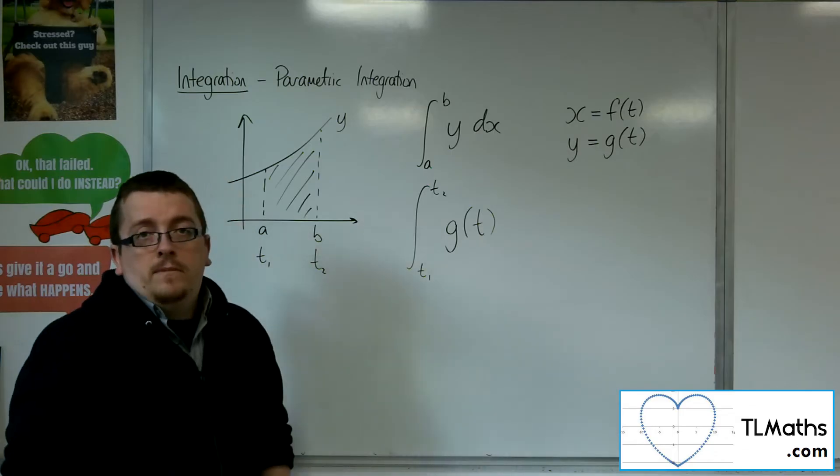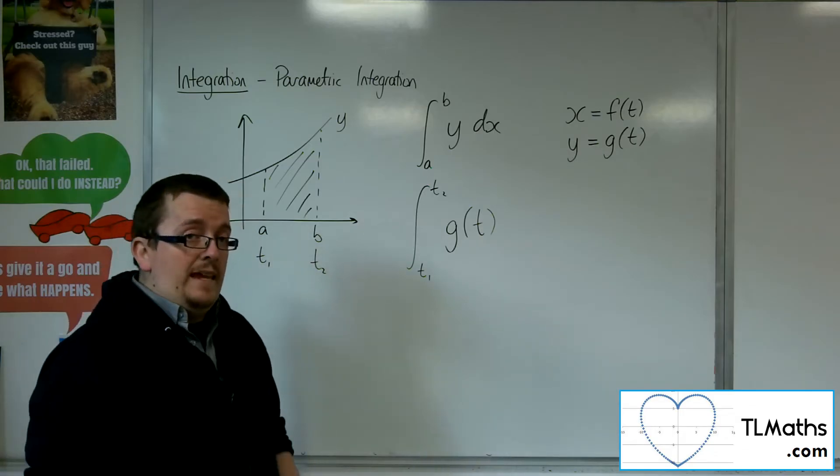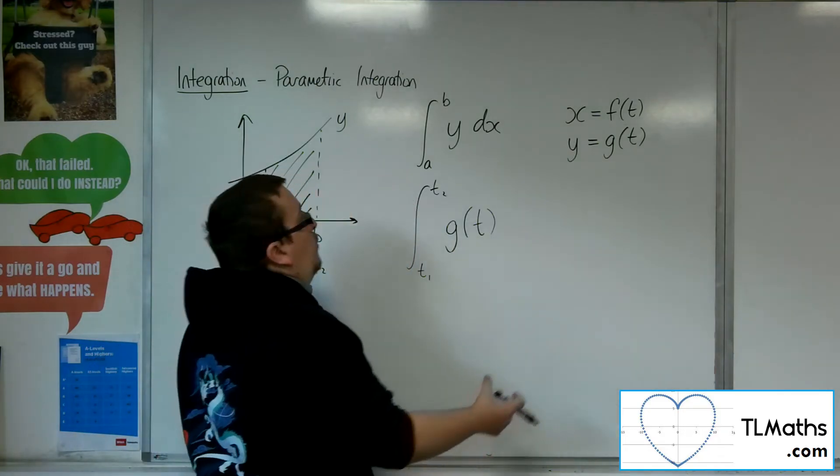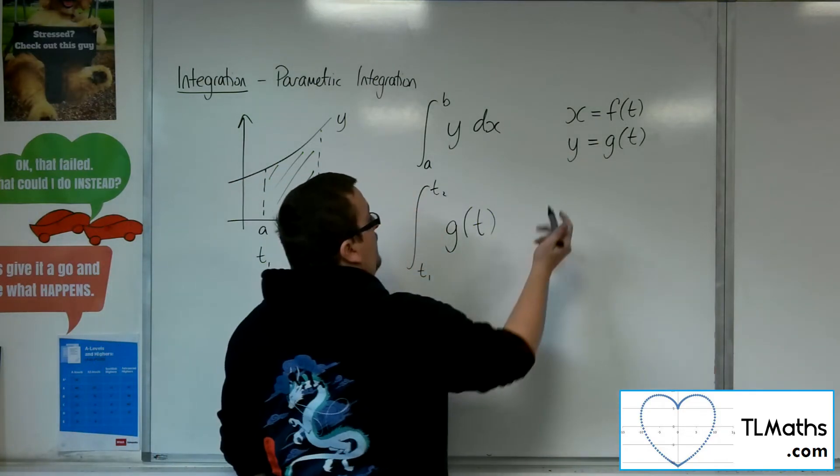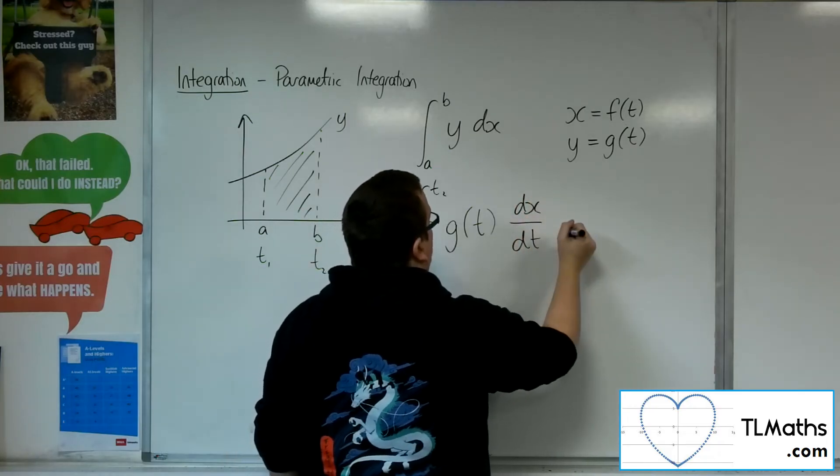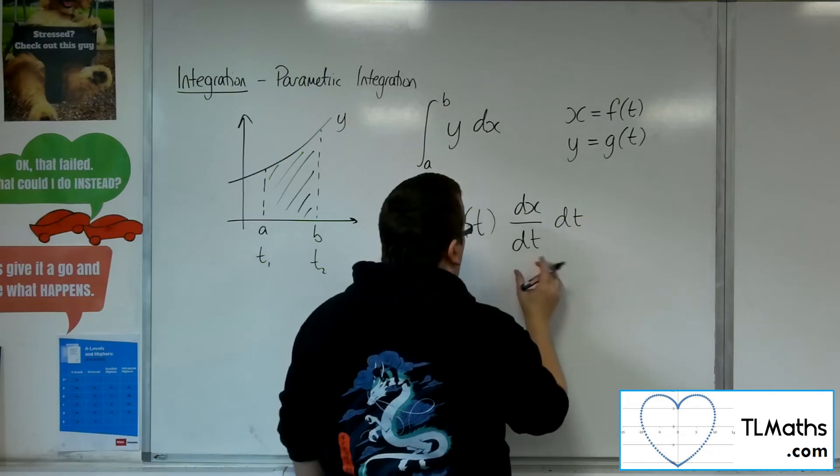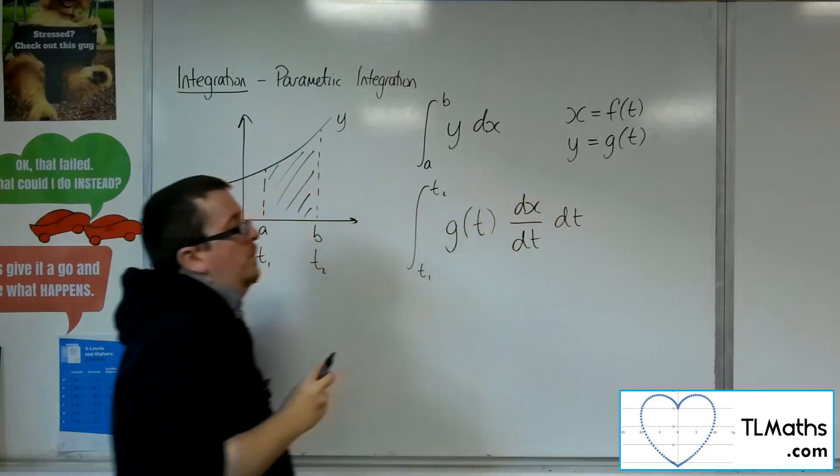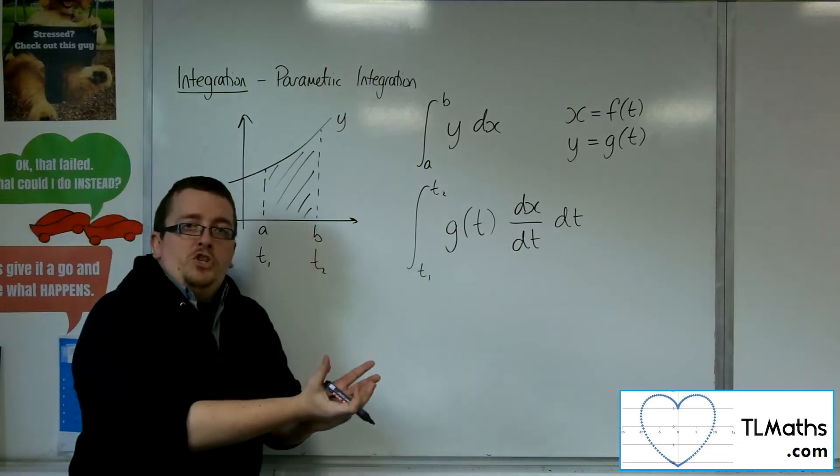So in order to deal with that, what we could do is we could have dx by dt dt in order for that dx to become, substitute effectively, to become dx by dt dt.